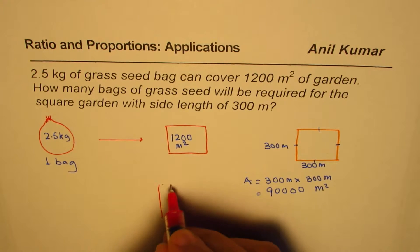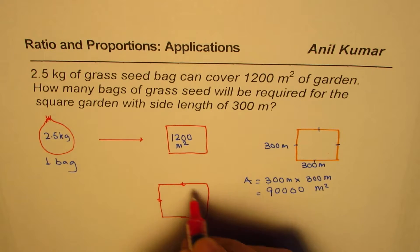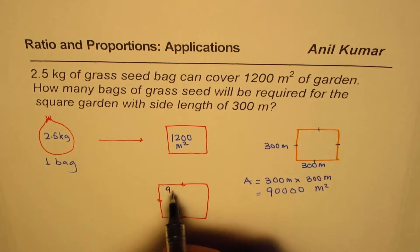So what we have here is a very big plot. So this plot is nine and four zeros, or you can say 90,000 square meters.